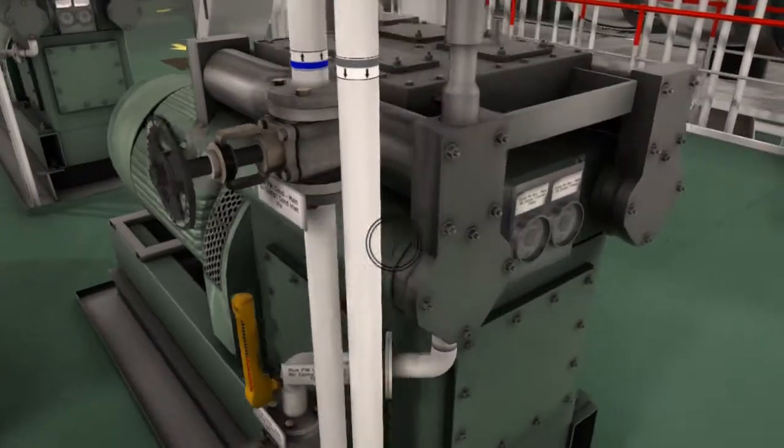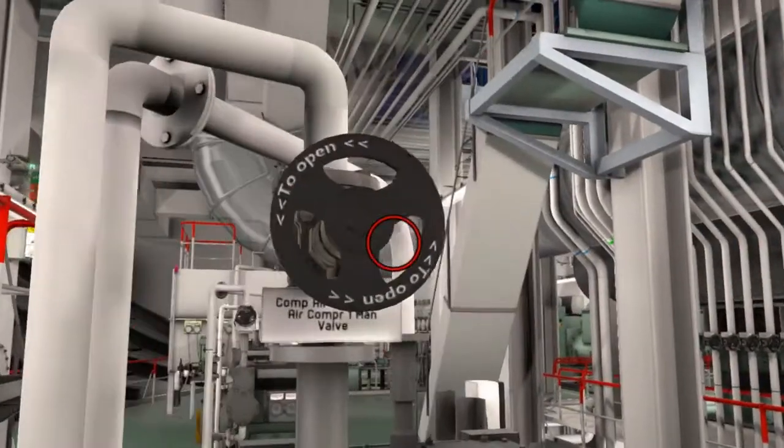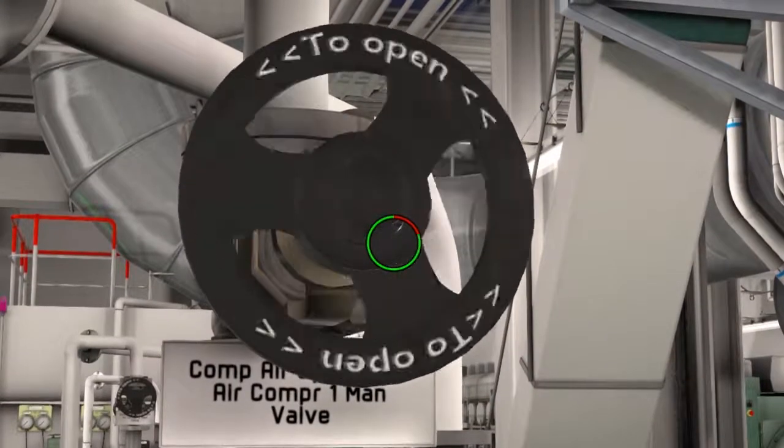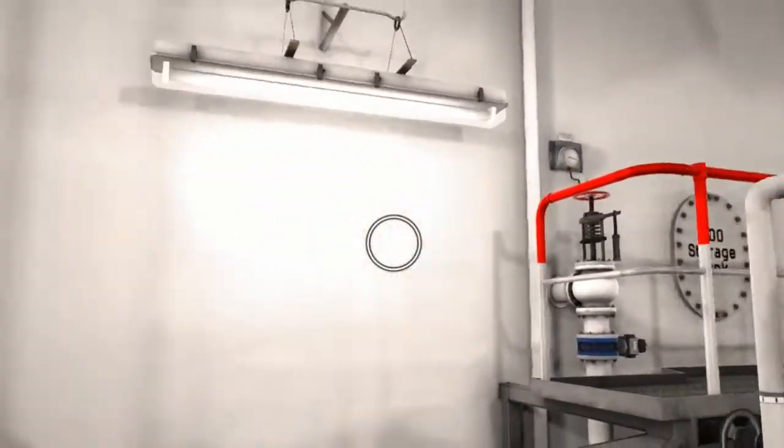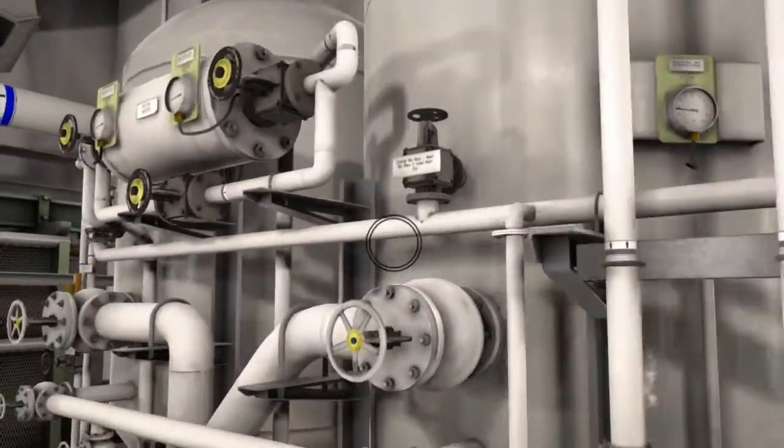Before starting the compressor, open the high pressure outlet of the compressor, then in the air receivers. This may vary what air receiver you will be using. Open the main air receiver inlet manual valve.